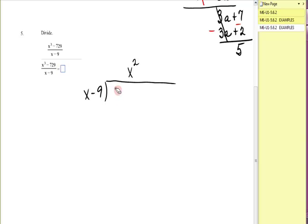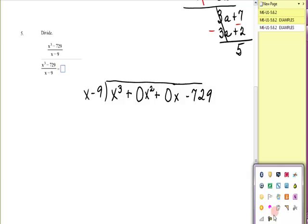So I'm going to erase and show you what to do. You're going to have x to the third plus, you don't have an x squared, so I'm going to call it 0x squared. Plus, you don't have an x. I'm going to call it 0x, and then you do have a constant of minus 729. These are placeholders, and you will see the value to those when you start dividing.